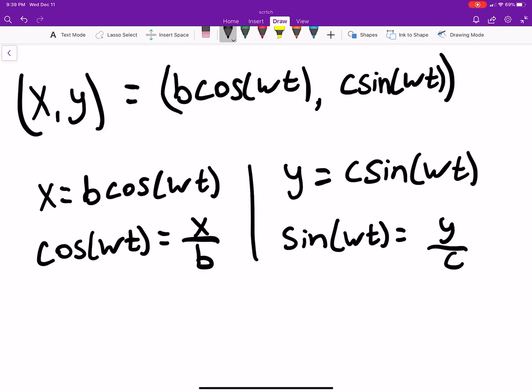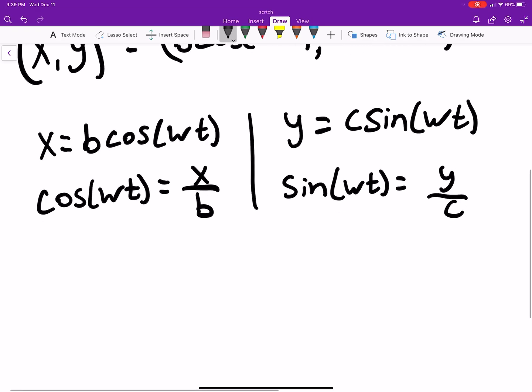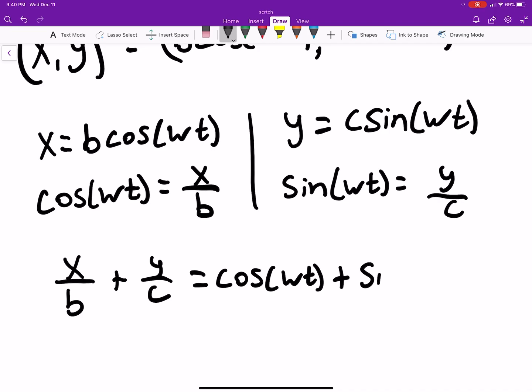What we could do is, these are all equivalent, so x over b plus y over c is equal to what? Well, x over b is cosine of omega t plus y over c, and we said y over c is sine of omega t.